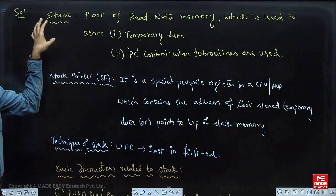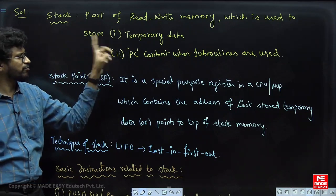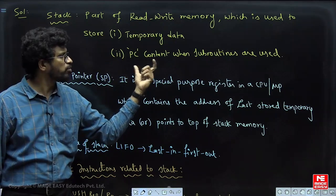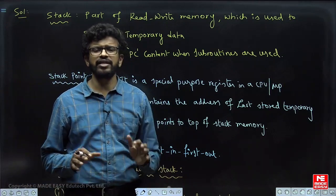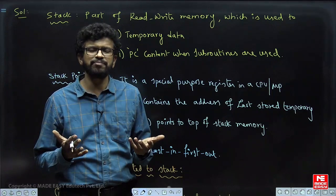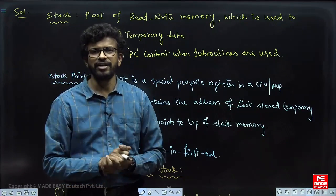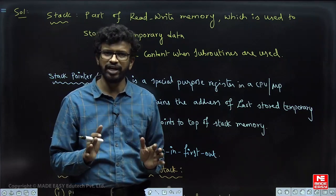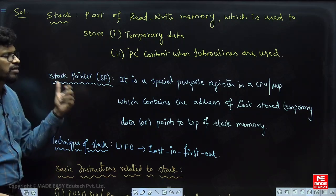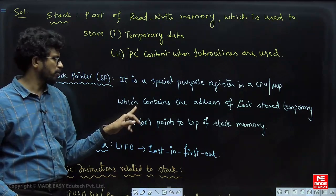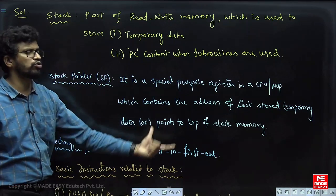What is the meaning of stack? Stack is a part of memory used to store temporary data — that is the first use. It also stores the program counter (PC) value when subroutines or interrupts are used. The part of memory where you store temporary data is called stack memory. The important register linked with stack memory is the stack pointer, which is a special purpose register that contains the address of the last stored temporary data, or simply points to the top of the stack.